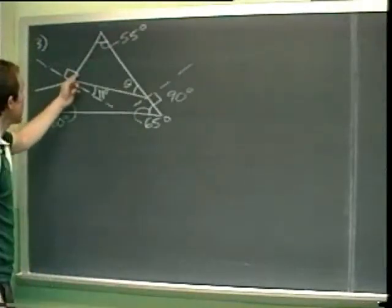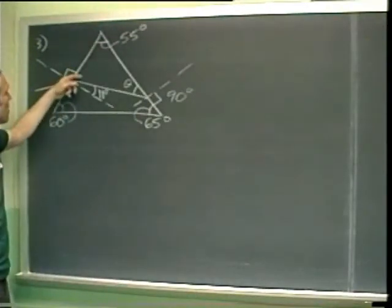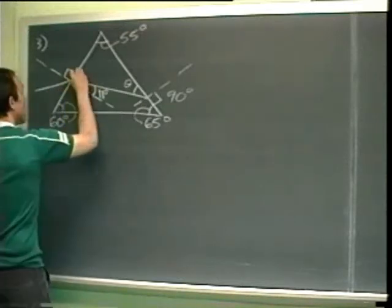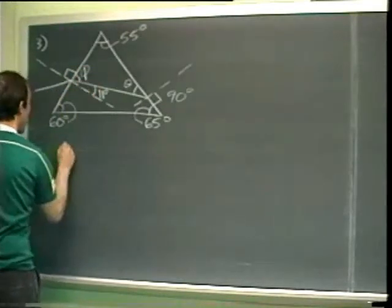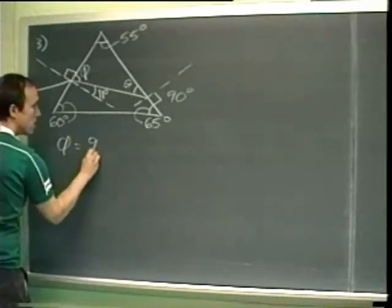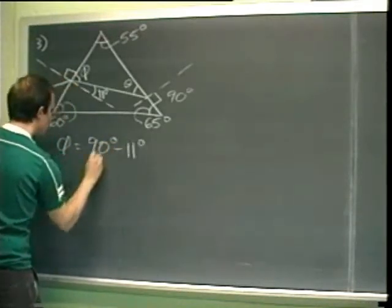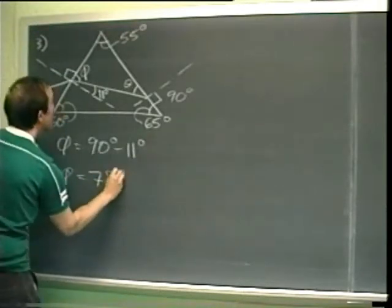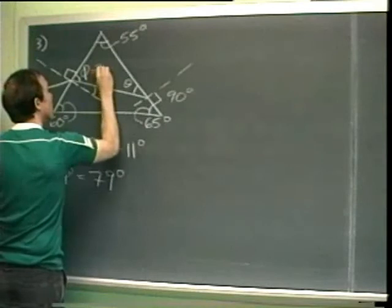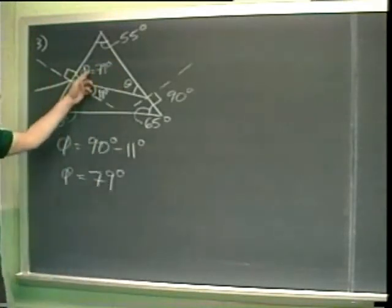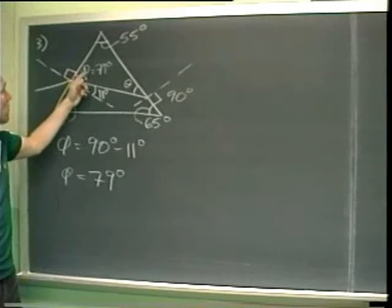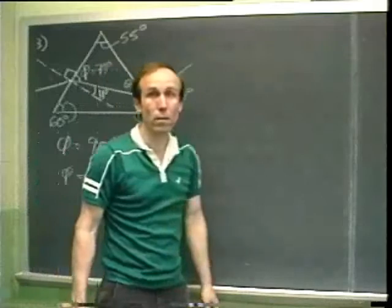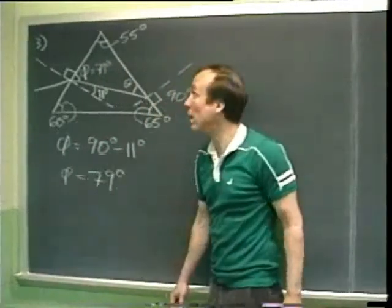Here's the game plan: this angle plus 11 degrees has to add up to 90 degrees. So this angle, I'll call it phi, is 90 degrees minus 11 degrees. Now these three angles — phi, 55 degrees, and theta — are the interior angles of a triangle, so they have to add up to 180 degrees.